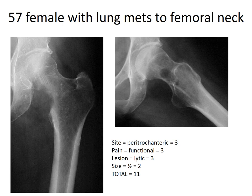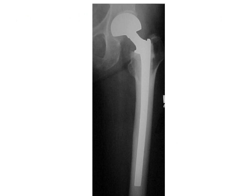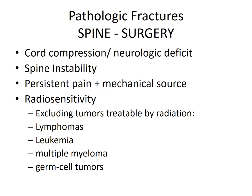Here's an example using Mirels' classification: a 57-year-old female with lung mets to the femoral neck. The location is peritrochanteric; the patient has functional pain with walking, turning in bed, and taking a step; the lesion is clearly lytic; and the lateral view shows at least half of the femoral neck involved. On the classification scale, this totals 11 — and this patient did benefit from surgical treatment.